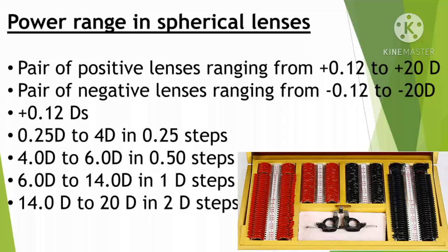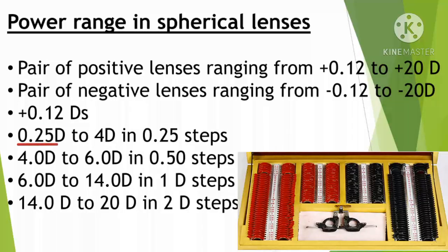The positive lenses start from plus 0.12 D and the last lens is plus 20 D. Similarly, negative lenses go from minus 0.12 D. From 0.25 D, there are four steps at 0.25 D intervals. The difference between steps is 0.25 D up to a certain range, then 0.5 D, 0.75 D, 1 D, and so on.